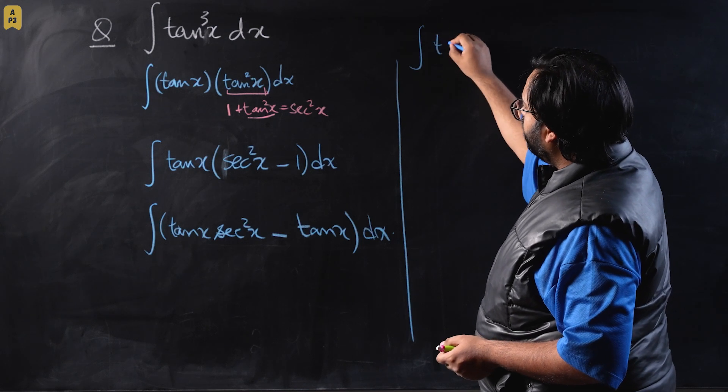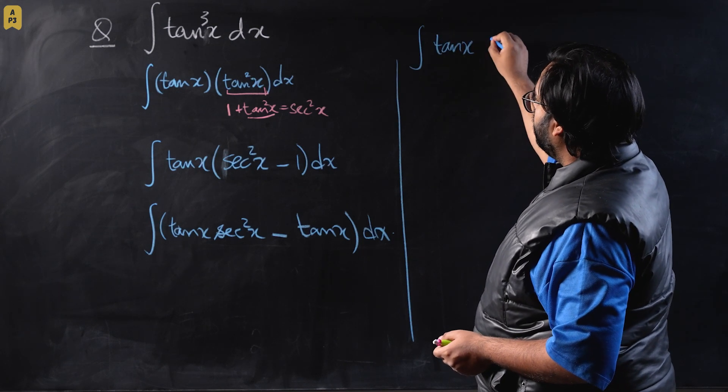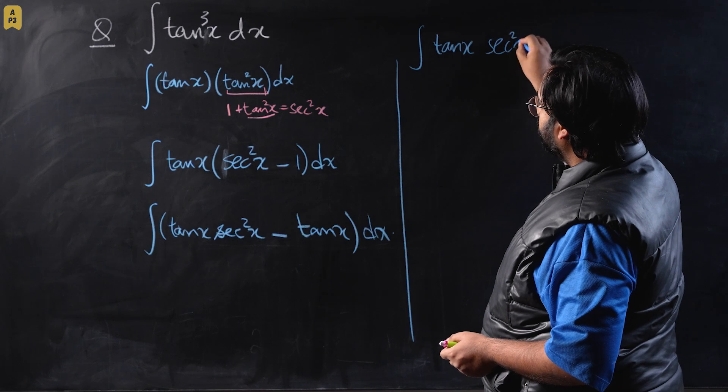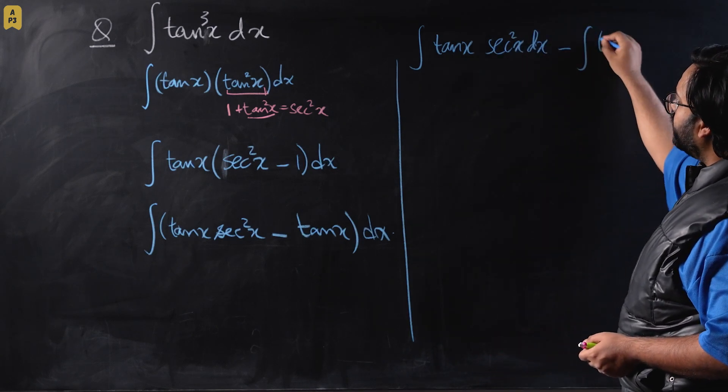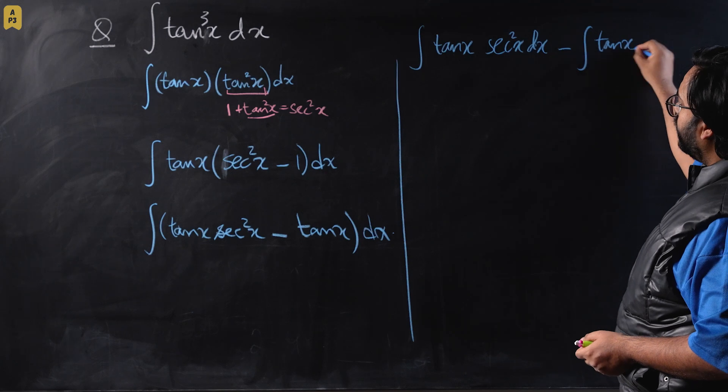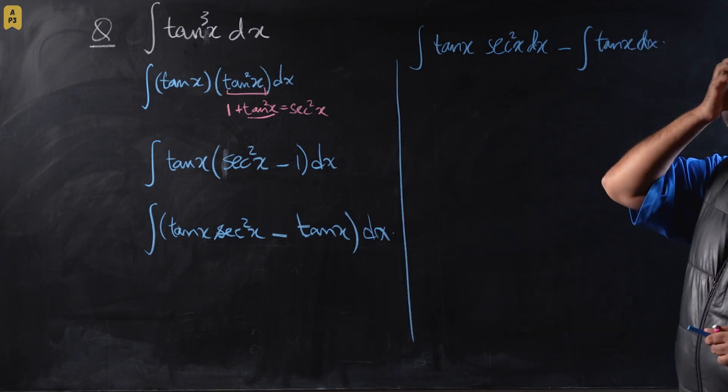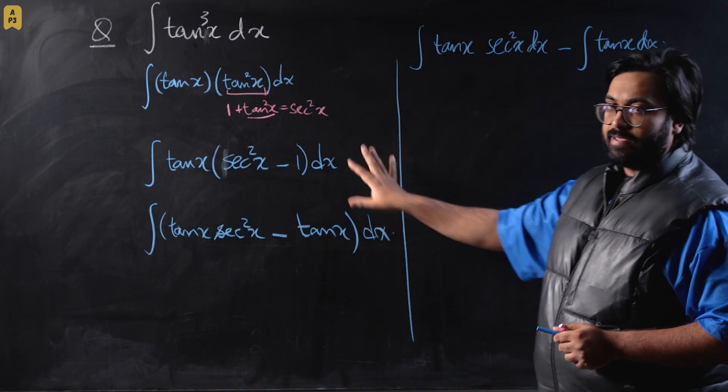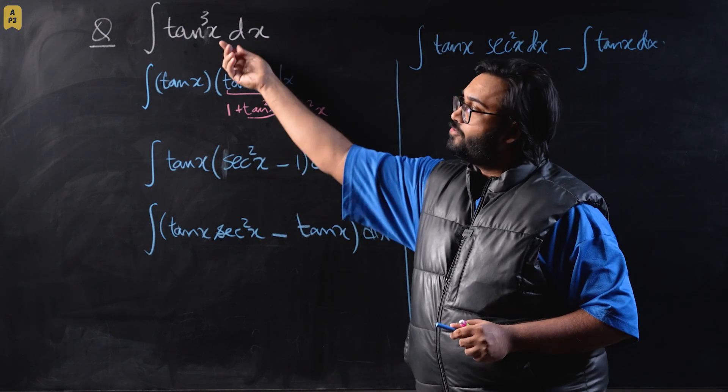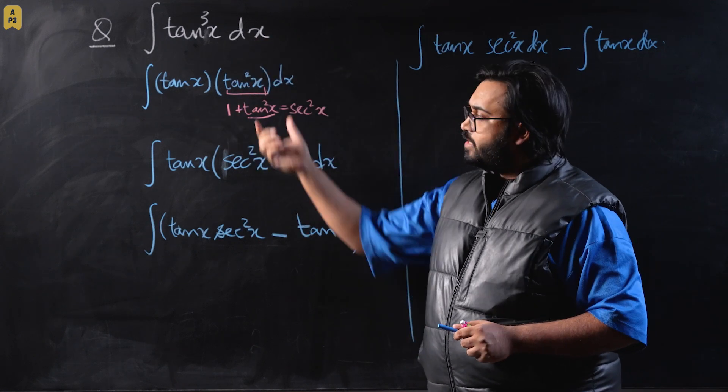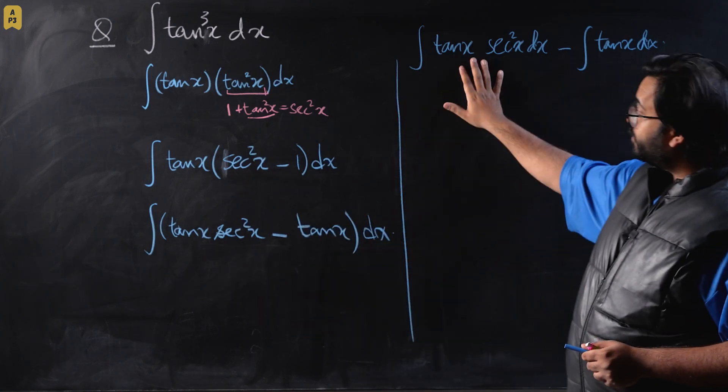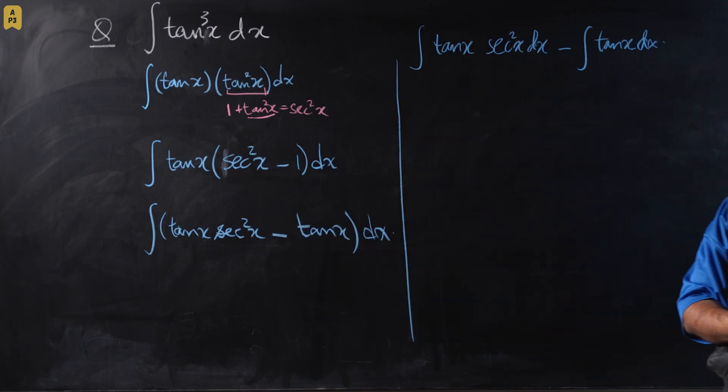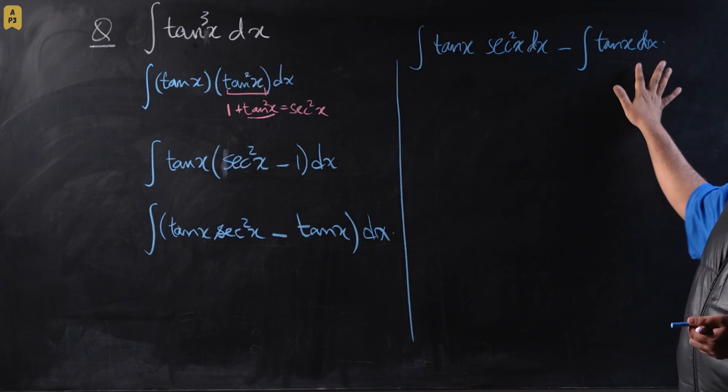I'll try to integrate tan x secant squared x dx separately, and I'll try to integrate tan x separately. This is where it gets tricky. The first stage is how to open the power and substitute tan squared for secant squared minus 1, and the second stage is solving these two integrals individually. Both of them are tricky in their own way.